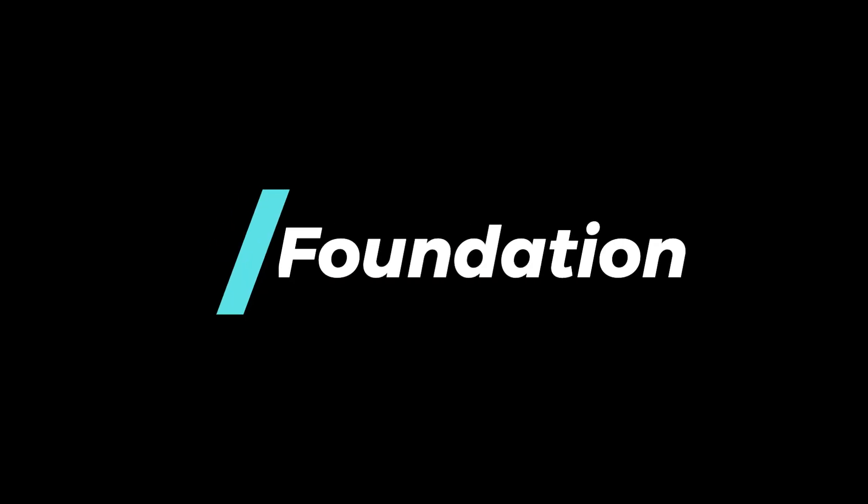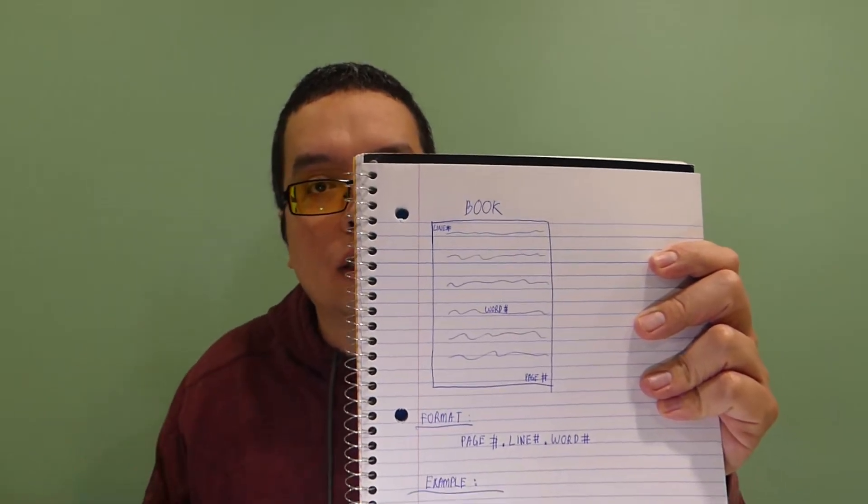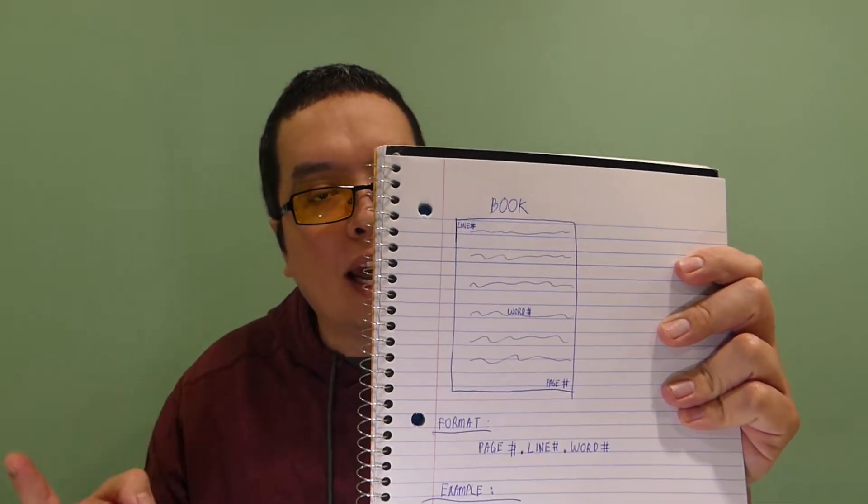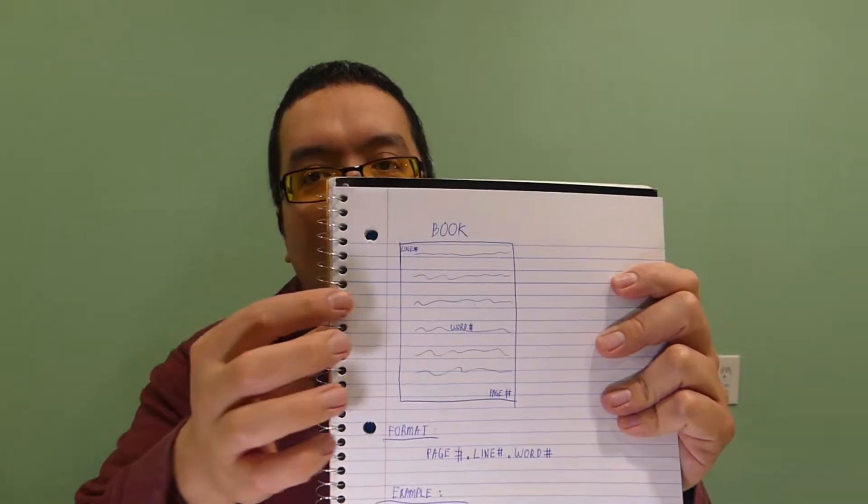This method is called the book cipher. The standard format for a book cipher is as follows: the book cipher consists of three components - the page number, the line number, and the word position in that line.